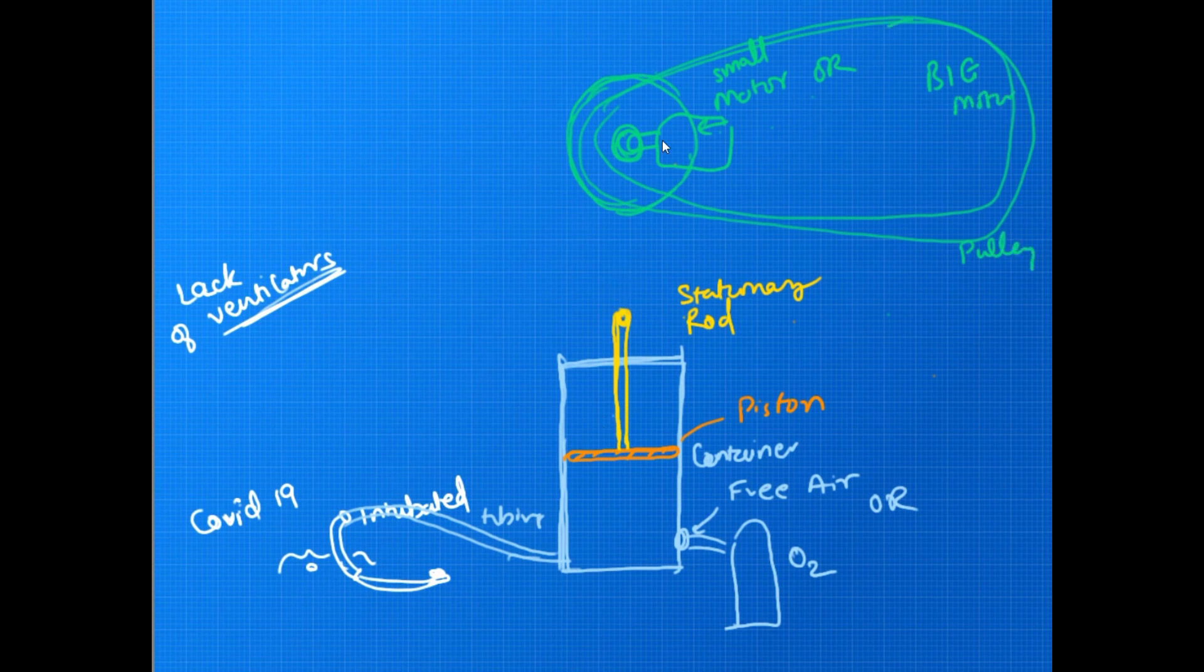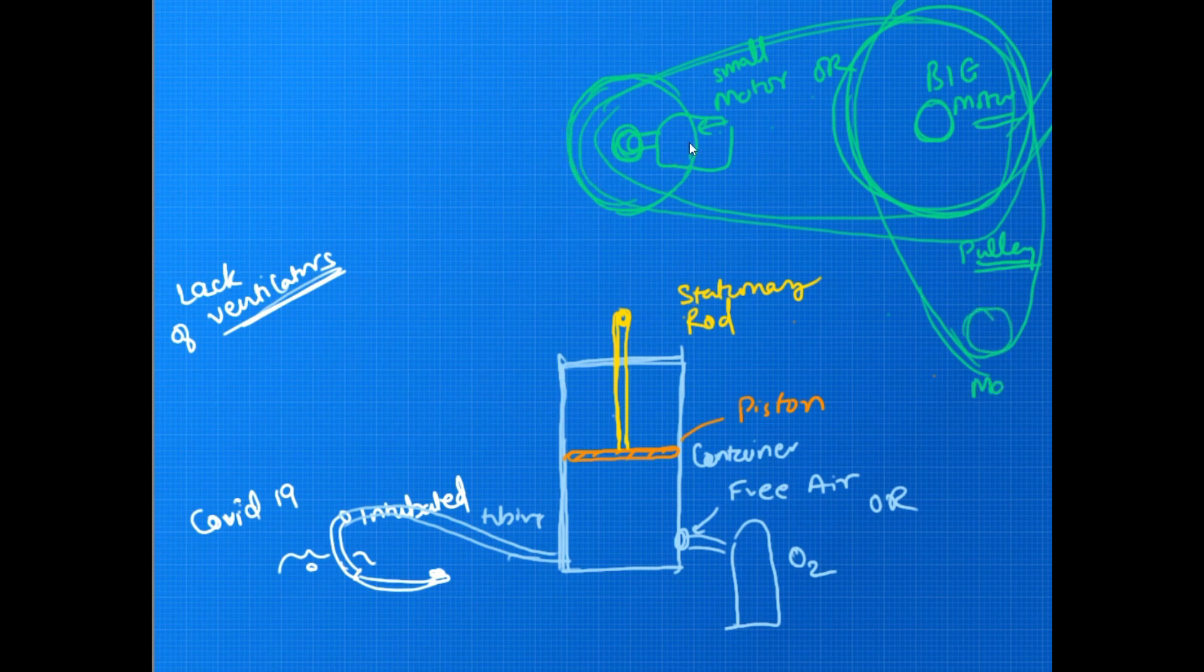This rod will be attached to this disc which will be able to rotate by a revolving rod which will connect this stationary rod to the disc. So basically when this disc will move either by this small motor or by a big motor which can power three or four patients at a time.